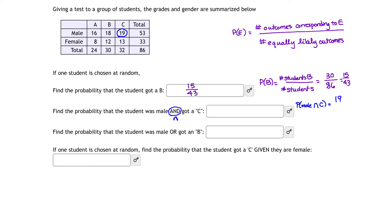So the numerator would be 19, divided by the total possible students, which is again 86 total students to choose from. The probability that the student was male and got a C is simply 19 divided by 86, and that doesn't reduce.